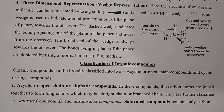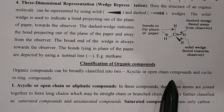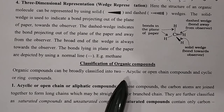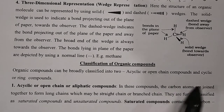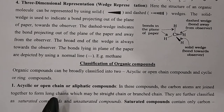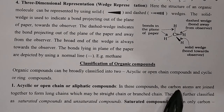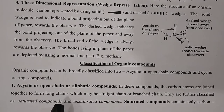Organic compounds can be broadly classified into two parts: acyclic or open chain compounds, and cyclic or ring compounds. Acyclic or open chain compounds are also called aliphatic compounds — the name itself suggests a linear chain. In these compounds, carbon atoms are joined together to form a long chain, which may be a straight chain or a branched chain.